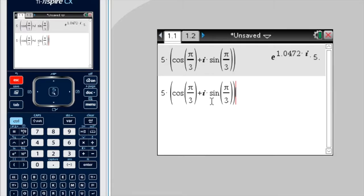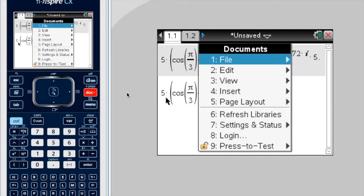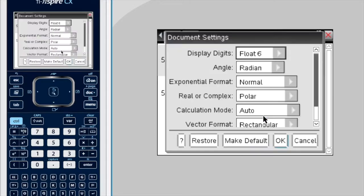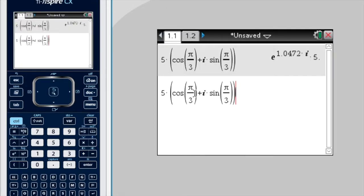To put your document in polar form, if you haven't already done so, press document, settings and status, document, settings, I've got real or complex, polar, okay? I've just changed it, so that they then give it to me in polar form.